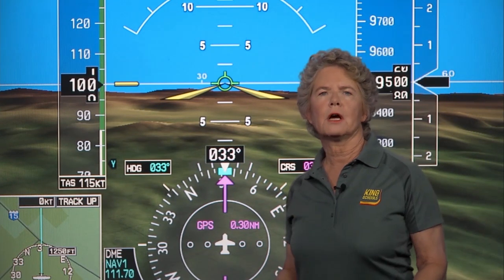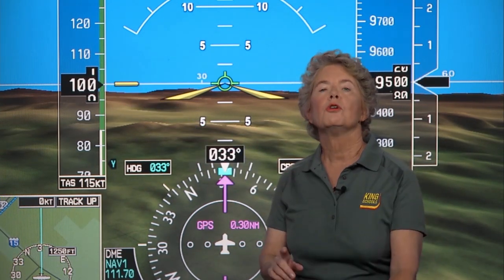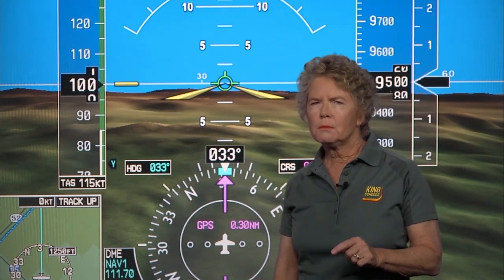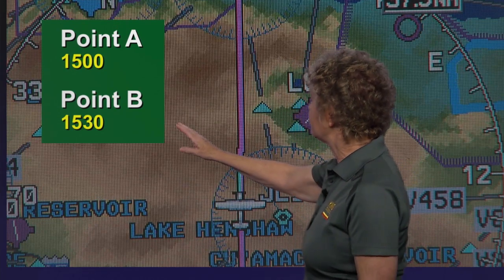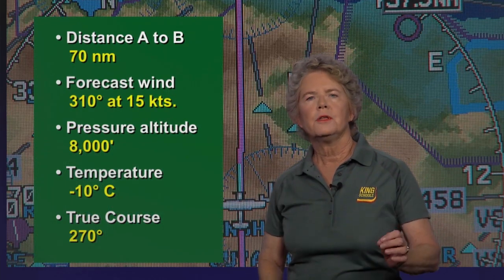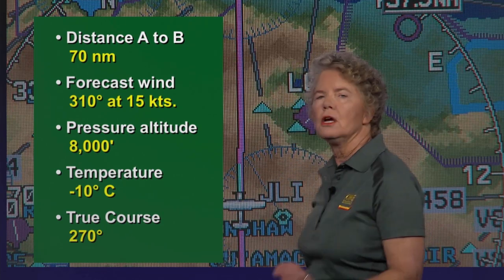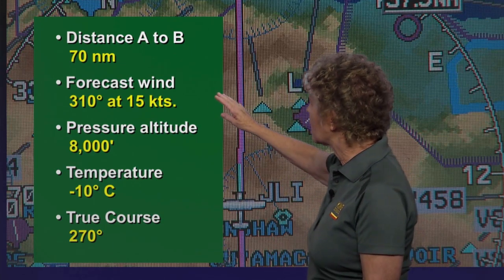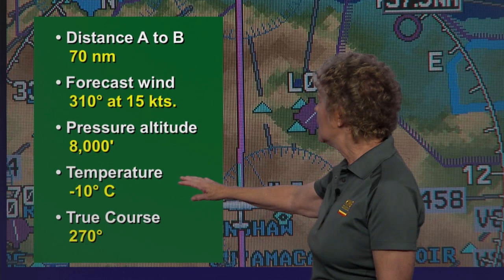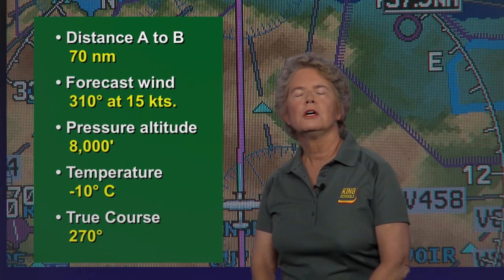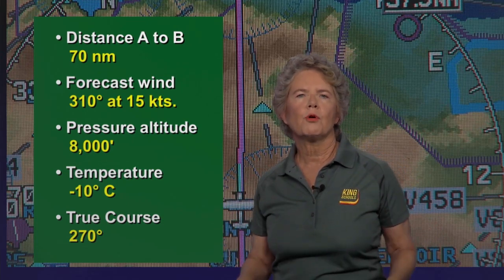Suppose the FAA asks you to figure out what indicated airspeed you'll need in order to cross a fix at a certain time. It's similar to the procedure the military uses for determining their time over target. The FAA will tell you that you crossed point A at 1500 and expect to arrive at point B at 1530. The distance between A and B is 70 nautical miles, forecast wind is 310 degrees at 15 knots, pressure altitude is 8,000 feet, temperature is minus 10 degrees C, and true course is 270 degrees. What indicated airspeed is required to reach point B on time?